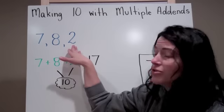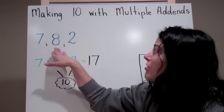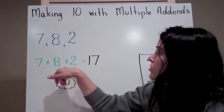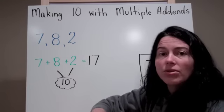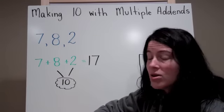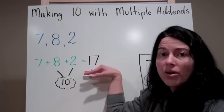Now, I know that 7 and 2 don't make 10, but I do know that 8 and 2 make 10. So right away, I make my friendly 10. Now I know that I have to add 10 to 7, which gives me a total of 17.